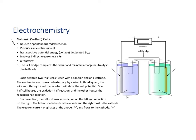Here's the galvanic cell. It houses a spontaneous redox reaction. It produces an electric current, and it's going to have a positive potential energy voltage that we will designate as E° cell. It involves what we call indirect electron transfer. This salt bridge completes the circuit and maintains charge neutrality in the half cells. Here's our basic design: we have two half cells, and these electrodes are connected externally by a wire, which we pass through a voltmeter so we can read the voltage.